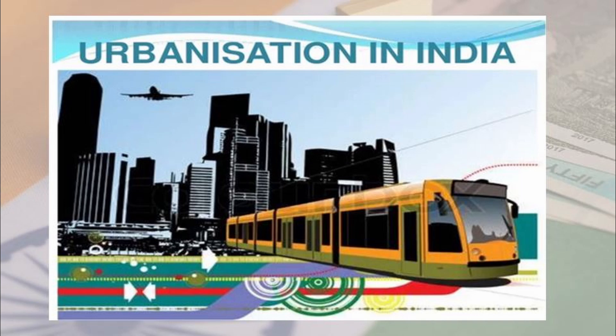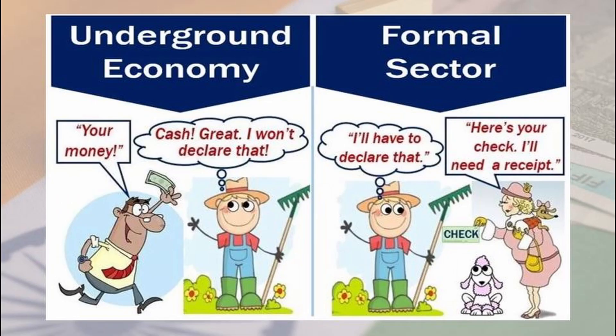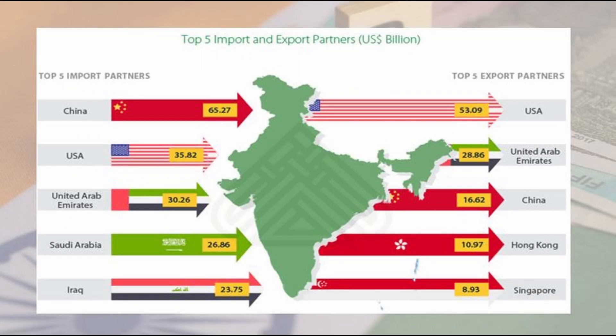Trade, hotel, transport, and communication, despite showing 11.9 percent growth this year, have still not made up for output lost since FY20. Studies show Indian cities are likely to contribute 70 percent of India's GDP by 2030, reflecting the exponential rate of urbanization underway. Underground economic activity negatively affects growth and reduces tax revenues. Countries open to international trade tend to grow faster and innovate more, and foreign trade has played an important role in India's economic growth over the past two decades.